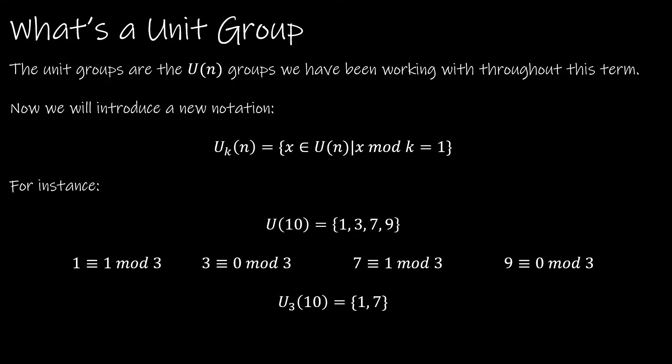Now what we're going to do is actually introduce a new notation. And this new notation is U sub k of n. And that would give us all of the elements that are in U(n) such that x mod k is equal to 1.